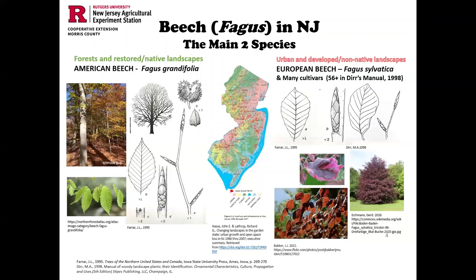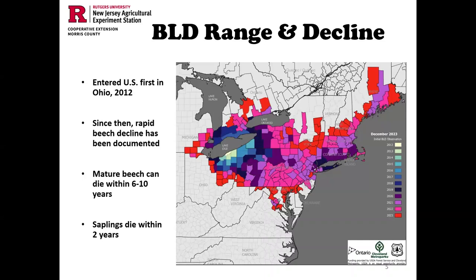Beech leaf disease entered the United States in Cleveland, Ohio — you can see the white area just below Lake Erie on the map. It came in 2012. Since then it has spread mostly eastward, but also north, a little west, and a little south, and it's spread rapidly. We've documented decline of our beech, and unfortunately without any treatment or intervention, mature beech can die within 6 to 10 years, and saplings can die within 2 years. The spread is mostly eastward, and we're going to talk about vectors — potentially wind and rain have much to do with the transmission and the pattern of spread.